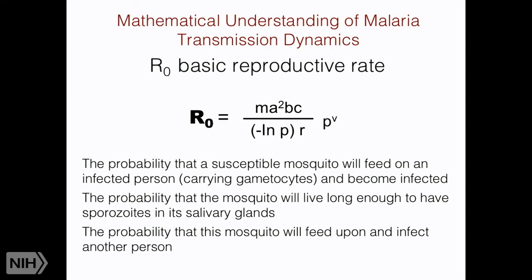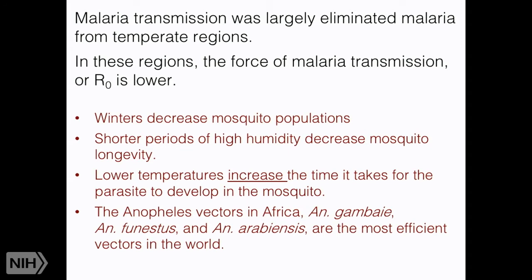Malaria transmission was largely eliminated from temperate regions because R-naught, or the force of malaria transmission, is much lower there. Why? Because winters decrease mosquito population; shorter periods of high humidity decrease mosquito longevity. Mosquito longevity is directly a function of humidity — if you have long periods of high humidity, like around the equator, you can have six months of high humidity, mosquitoes live longer, and the longer they live the better they are at transmitting. Lower temperatures in temperate regions also increase the time it takes for the parasite to develop in the mosquito.